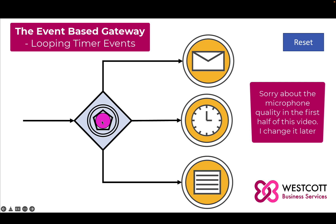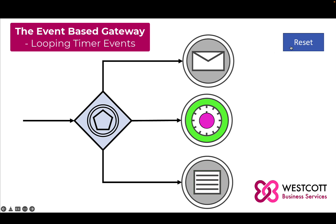Clicking the event-based gateway puts the events in standby in anticipation of any of the events occurring. If I select any of these three events now, the token would be pulled to that event, effectively switching it on. This would render the other two intermediate events as disabled — they wouldn't be able to respond to any events that may occur in this instance of the process.